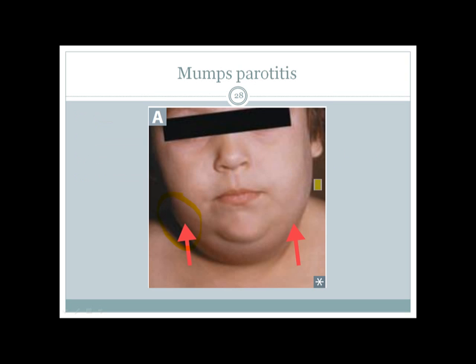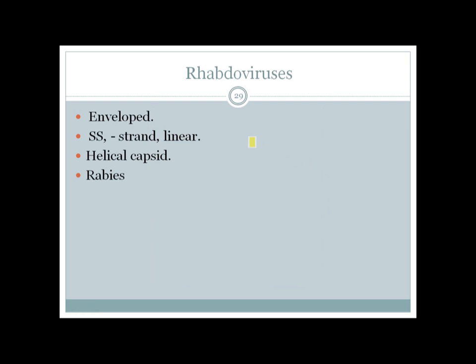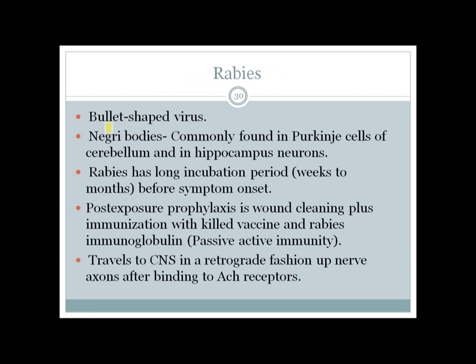Rhabdovirus — R for Rhabdovirus in the mnemonic — is a negative-strand virus. The most important virus in the Rhabdovirus family is Rabies, a bullet-shaped virus. More importantly, Negri bodies are intracellular inclusions found in Purkinje cells of the cerebellum and hippocampal neurons. Rabies has a long incubation period, so post-exposure prophylaxis is critical: clean the wound, give a killed vaccine, and give rabies immunoglobulin. Rabies travels from distal body areas through axons to the CNS by retrograde transport, after binding to acetylcholine receptors.